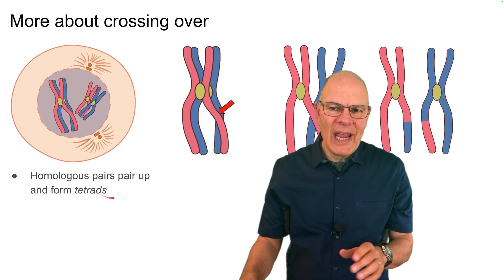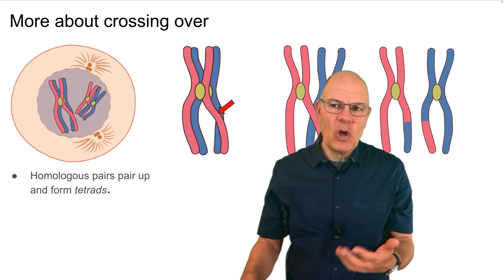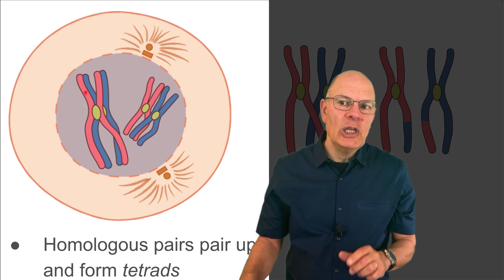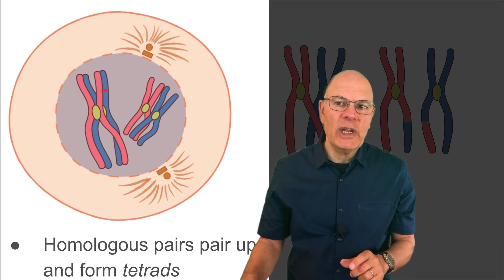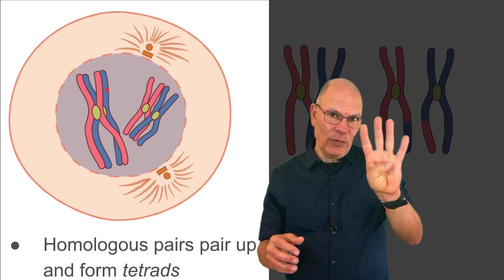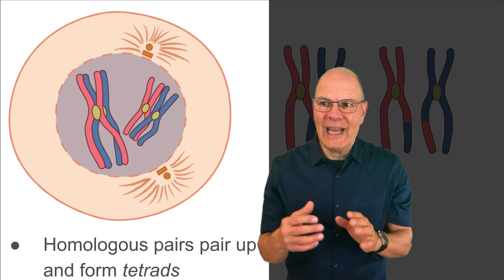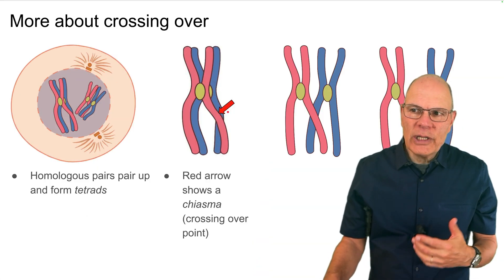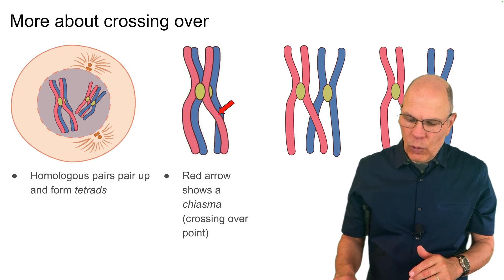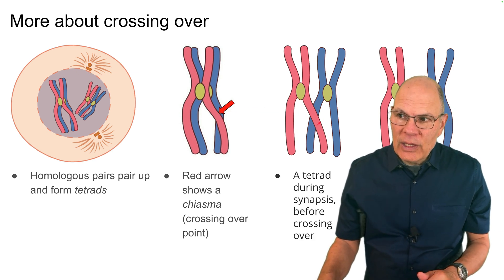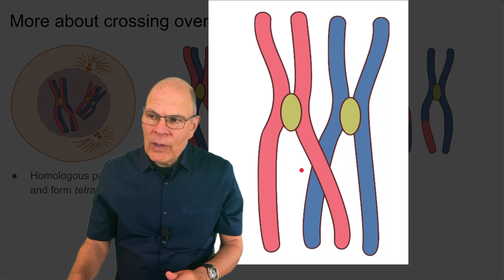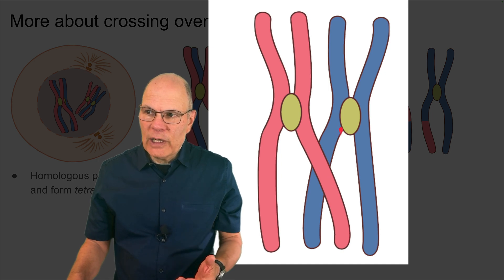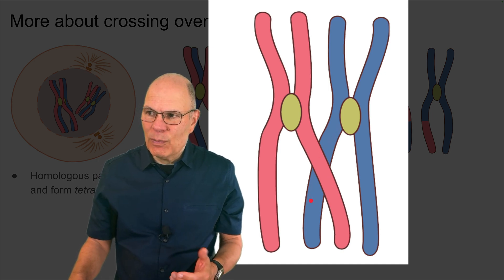We start with the homologous pairs pairing up, forming units called tetrads. There are two tetrads in this diagram. In each homologous pair you have four sister chromatids total — that's why it's called a tetrad. In each tetrad there's an area called a chiasma, which is a crossing over point. You can see that more clearly here: this is the chiasma, and you can see the crossing over between the chromosome represented as red and the chromosome represented as blue.